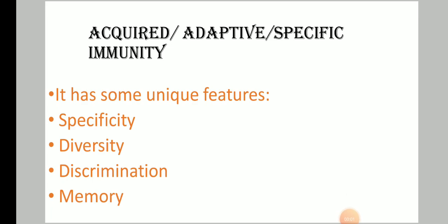Hello and welcome back everyone for the second part of Human Health and Diseases. Last time we studied what is health, what is disease, what is immunity and types of immunity. In that, we completed the first part of immunity — innate immunity — and the barriers present in innate immunity.